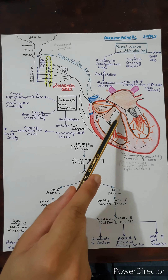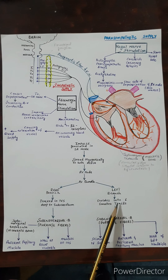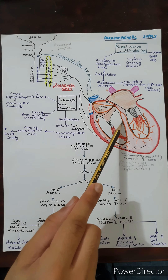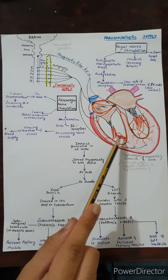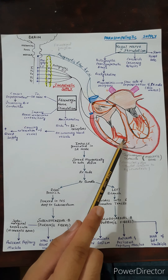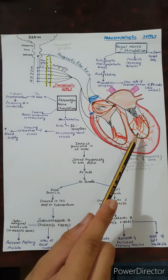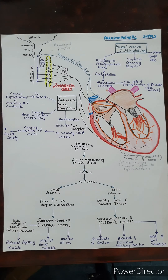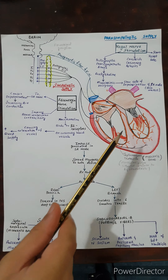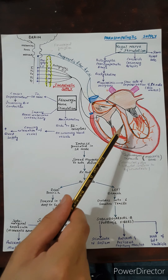Now we will discuss the left branch of the AV bundle. The left branch divides into six smaller tracks. This division is not the case for the right branch. Also, the septomarginal trabecula is exclusive only to the right ventricle and is absent in the left ventricle. This is a point to remember.